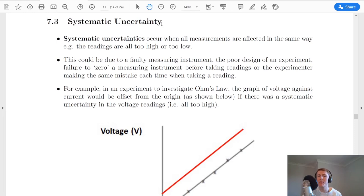So moving on to look at systematic uncertainty now, remember this is a recap from higher as well. Systematic uncertainties occur when all measurements are affected in the same way. For example, the readings are all too high or all too low. This could be due to a faulty measuring instrument, the poor design of an experiment, failure to zero a measuring instrument before taking readings, or the experimenter making the same mistake each time when taking a reading.